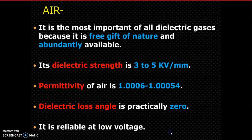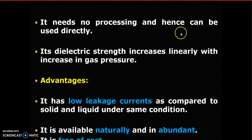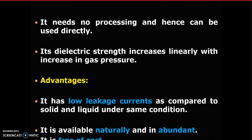Air is reliable at low voltage but is not used at higher voltages. It needs no processing and hence can be used directly - no additional mixing or additives are required. Its dielectric strength increases linearly with increasing gas pressure, following Paschen's law. Initially, as you increase pressure, breakdown voltage decreases; after a certain point, as you continue increasing pressure, breakdown voltage starts increasing. Pressure, temperature, and humidity all affect breakdown voltage.